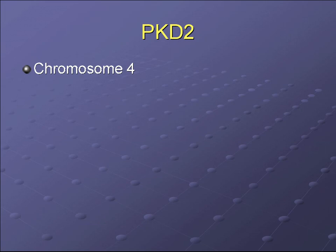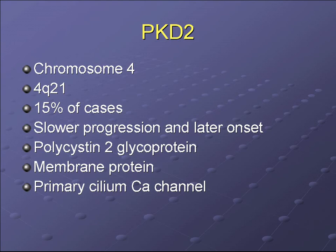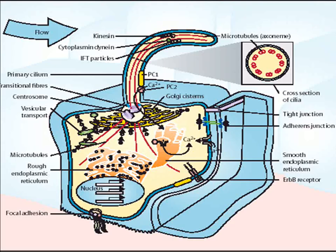In PKD2, the chromosomal defect is on chromosome 4q21. It accounts for 15% of cases and has a slower progression and later onset. It encodes a membrane protein thought to be a calcium channel, and the average life expectancy for these patients is 69 years, significantly longer than PKD1 patients.